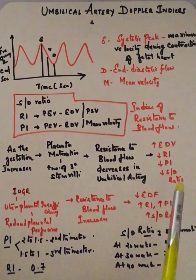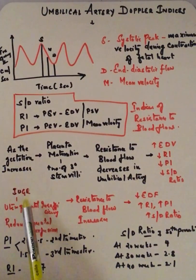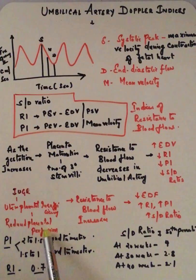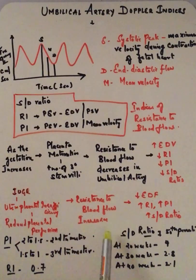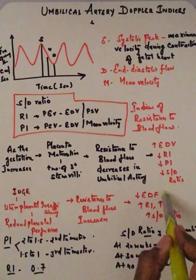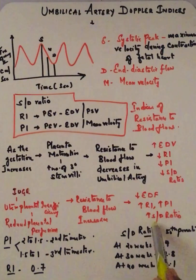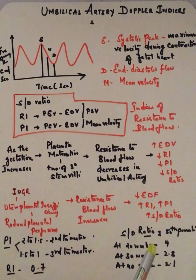Then RI, PI, and S/D ratio will be decreased. So as gestation increases, RI, PI, and S/D ratio will decrease. Coming to uteroplacental insufficiency and reduced placental perfusion: in this case, within the placenta there will be more resistance. As the resistance is more, resistance to blood flow increases, end-diastolic flow decreases, and RI, PI, and S/D ratio increases.